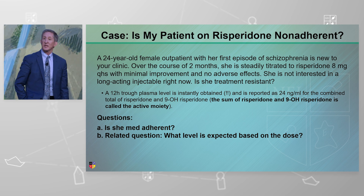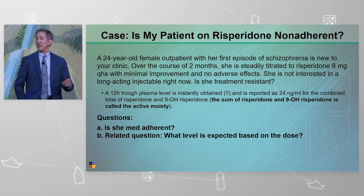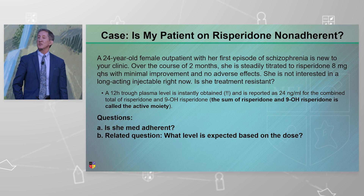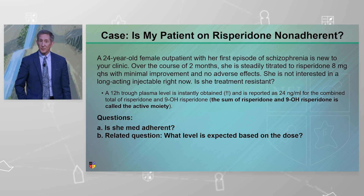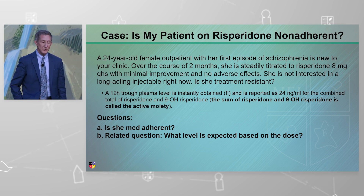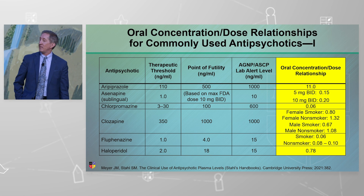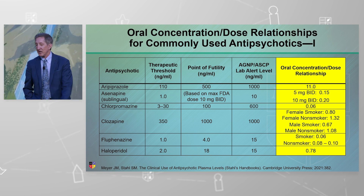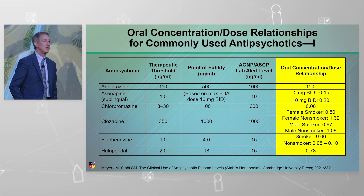We're now in the future where we can get a 12-hour level. She happens to be at your office at 9 o'clock in the morning, and we get a result. The question is, how do you interpret it and what do you do with it? I published a book a couple years ago which has tables like this, and I put the tables here for your convenience.